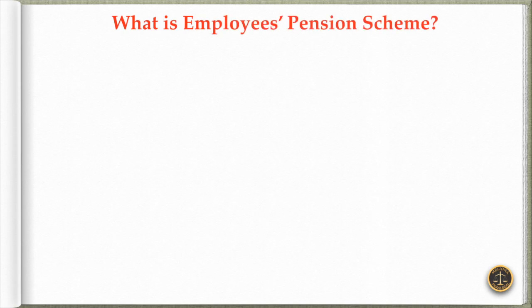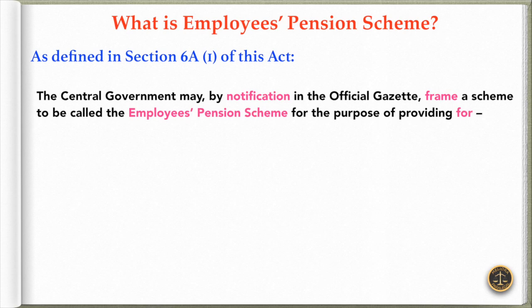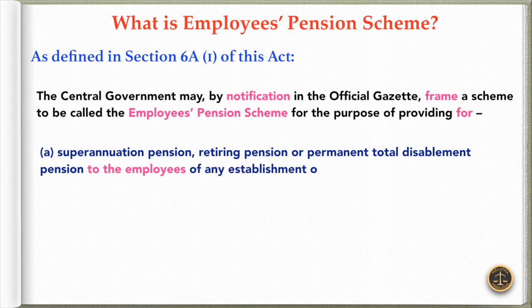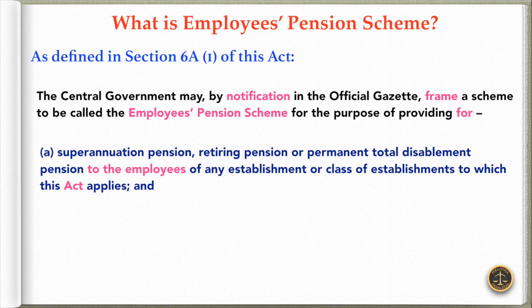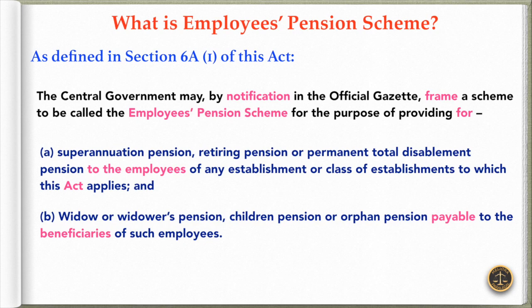The next question is: what is the Employees Pension Scheme? As defined in Section 6 of this act, the central government may, by notification in the official Gazette, frame a scheme to be called the Employees Pension Scheme for the purpose of providing superannuation pension, retiring pension, or permanent total disablement pension to the employees of any establishment or class of establishments to which this act applies, and widow or widow's pension, children pension, or orphan pension payable to the beneficiaries of such employees.